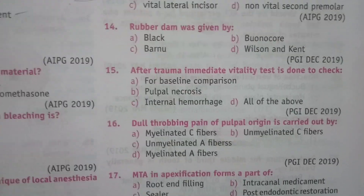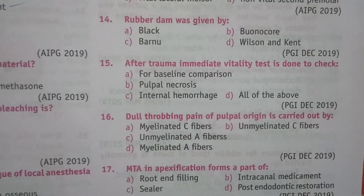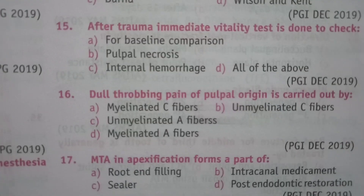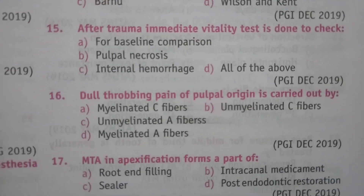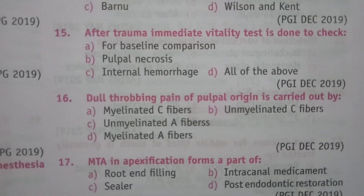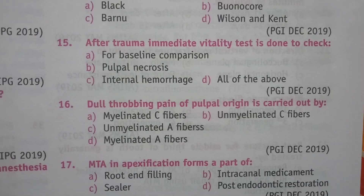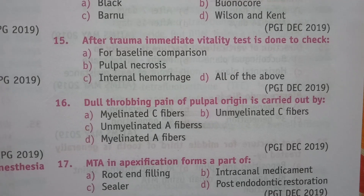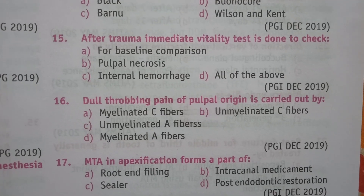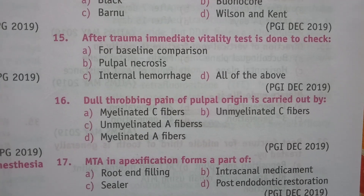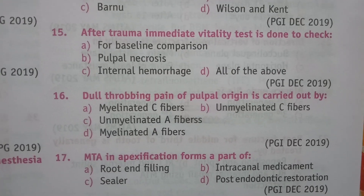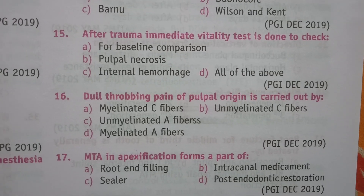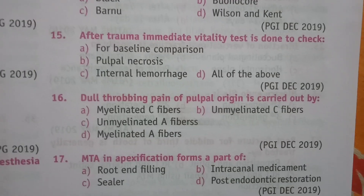Focus on question 16: dull throbbing pain of pulpal origin is carried by which fiber? The answer is B, unmyelinated C fibers.